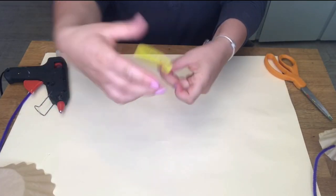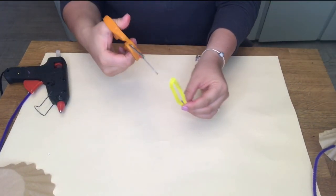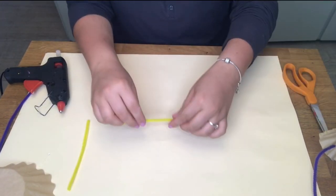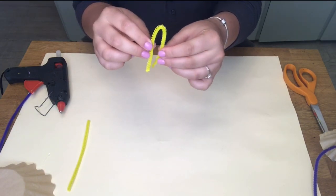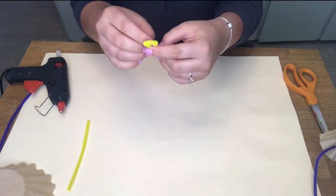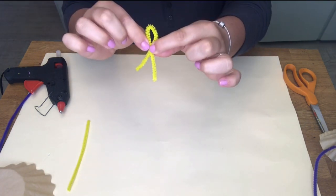So first take your pipe cleaner that's going to be our Parachute Man's body. We're going to fold it in half and cut it in two. Take one of those pipe cleaners and fold it in half so the two pipe cleaners that are bent crisscross each other.